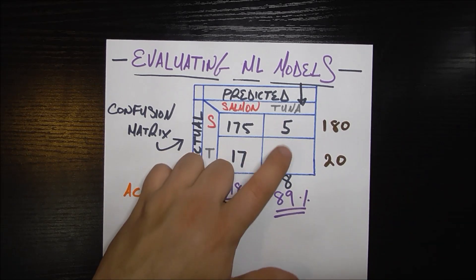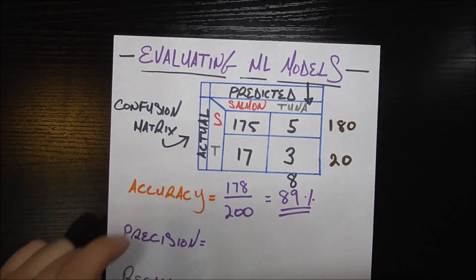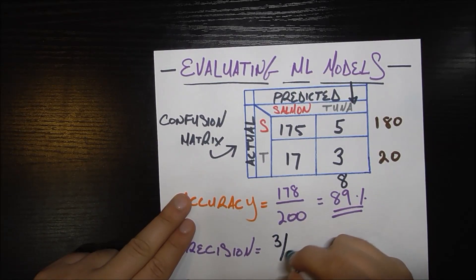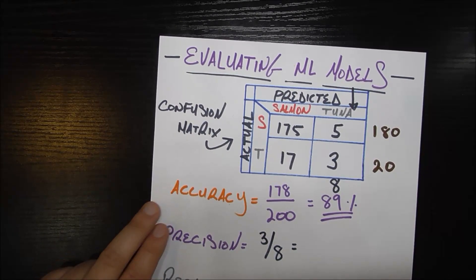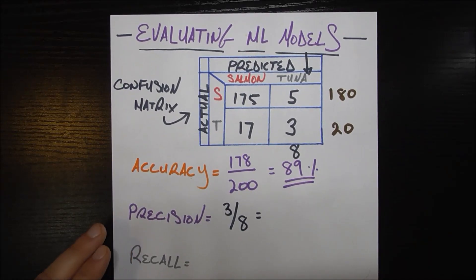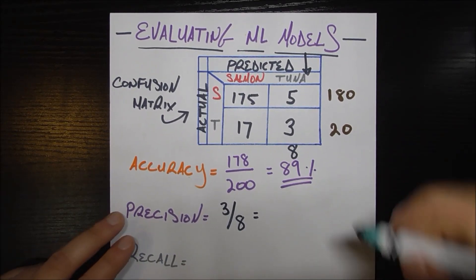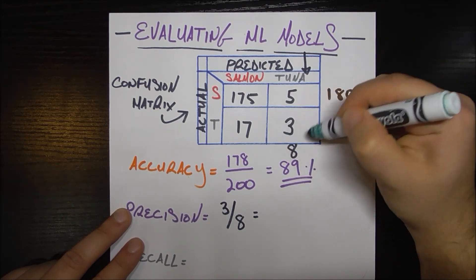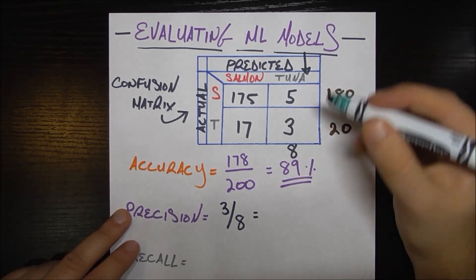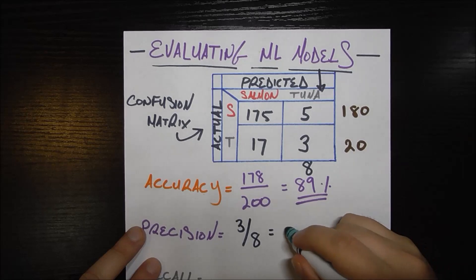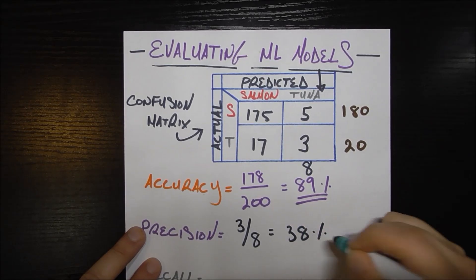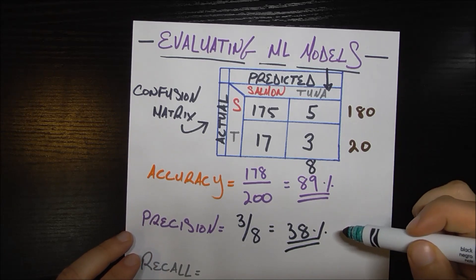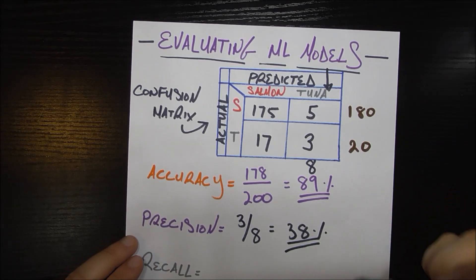Since our target class here is tuna we go ahead and look at this column. We made eight total guesses for tuna, right, five and three. Out of those eight how many did we get correct? Only three of them. So our precision is three out of eight. To just repeat myself to make sure this sinks in, this precision is out of all the ones where I guessed it was a tuna, how many did I actually get it correct right on the mark? Three out of eight, that comes out to about 38 percent. So not looking as good as that 89 anymore. Really not looking very good at all.